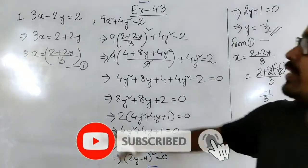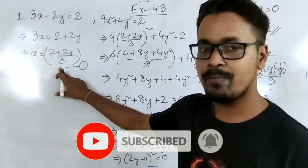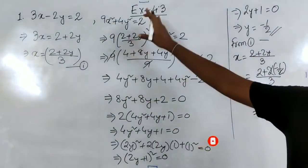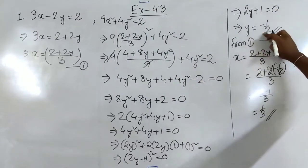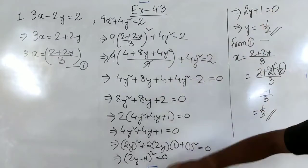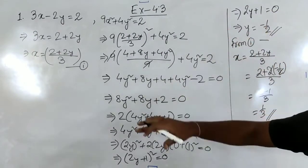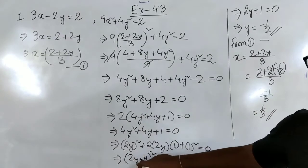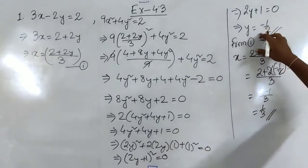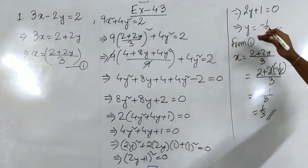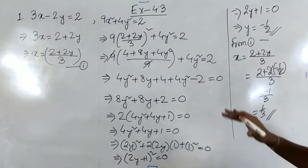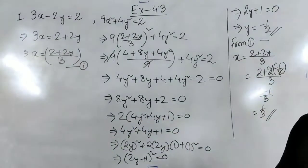Very easy. Use the linear equation to find one value, put that value in the other equation, and solve the quadratic equation. Here we are lucky we got only one value because we got a perfect square. If we had not got a perfect square, we would find two values — one positive and one negative — giving two values for x.